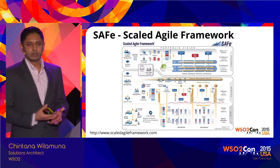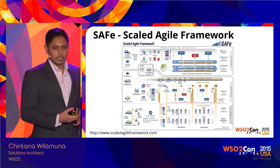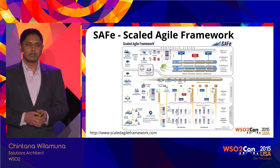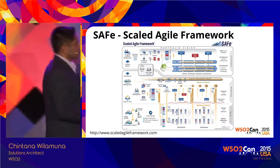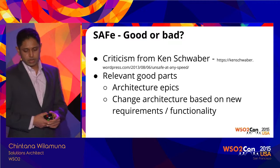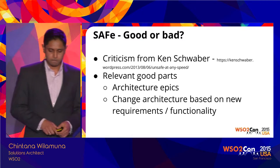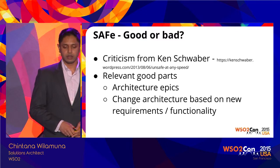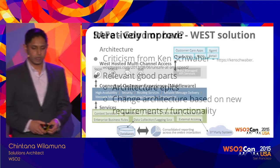In SAFe there are architecture epics at each release planning stage. An epic is a large activity that spans multiple sprints in a development cycle. The framework explicitly mentions that architecture evolves continuously, which is very good. During Scrum methodologies we get a lot of changes that feed back into the architecture, and SAFe handles that in a controlled way, which I've seen work well in practice.